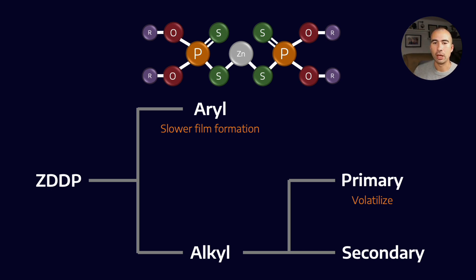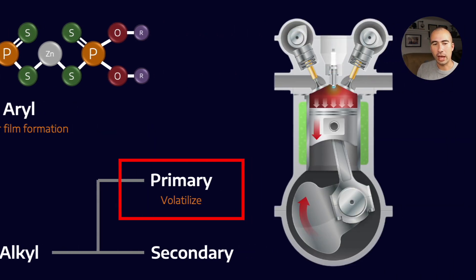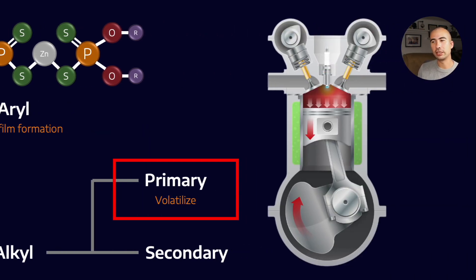So, what does that mean? Well, it means that primary ZDDPs are more likely to end up in the exhaust. If the ZDDP is on, for example, the liner, it will tend to volatilize off, make its way into the exhaust gases, and therefore poison the catalysts. So, one way that we can slow down the rate of catalyst poisoning is if we have fewer primary ZDDPs in the formulation. Therefore we will have less ZDDP in the combustion chamber, and therefore less in the exhaust.